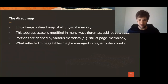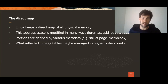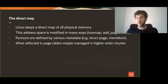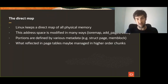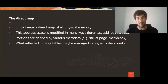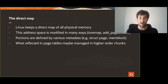Linux keeps the map of all physical memory in the kernel page tables, which is called the direct map. This address space is modified in a lot of ways throughout the different OS lifecycle stages: at boot when initializing the memory map and all the system RAM, at hot plug when hot plugging new memory, or when you try to map an IO address. Portions of this address space may be backed by various kinds of metadata which track different things at different granularities.